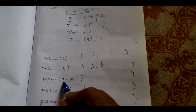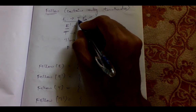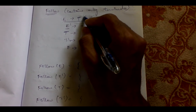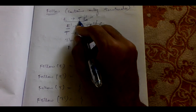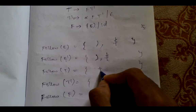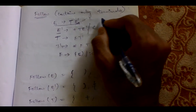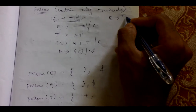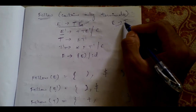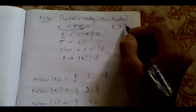Now for follow of T, we look for T in the right hand side of the grammar. T is followed by a non-terminal E', so the first of E' will contribute to the follow of T. The first of E' is plus and epsilon. So we write plus in the follow of T. But since epsilon is in the first of E', if E' becomes epsilon then the production becomes E → T, meaning T is at the end. So follow of E elements — closing bracket and dollar — are also placed in follow of T. Follow of T is: plus, closing bracket, and dollar.